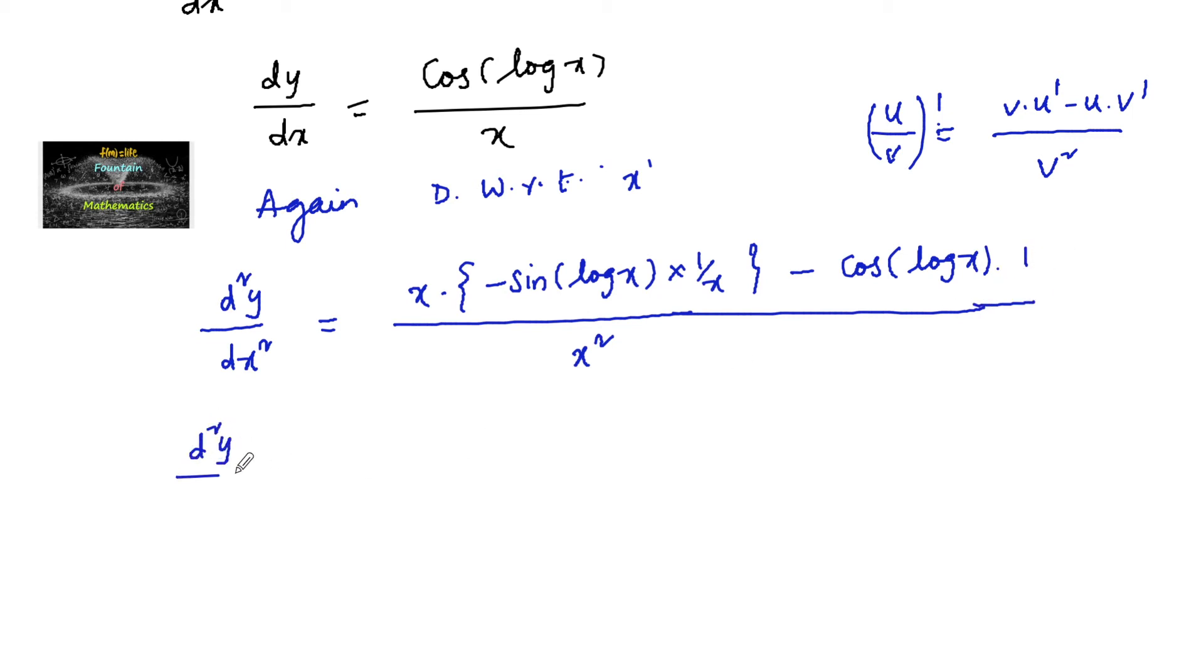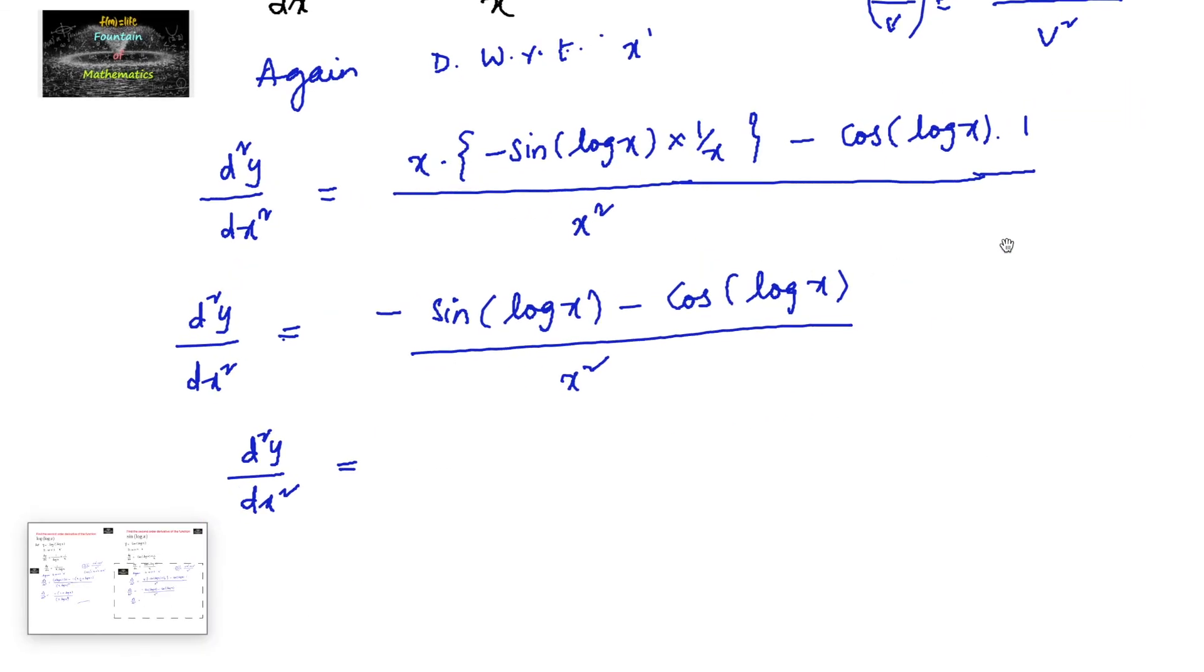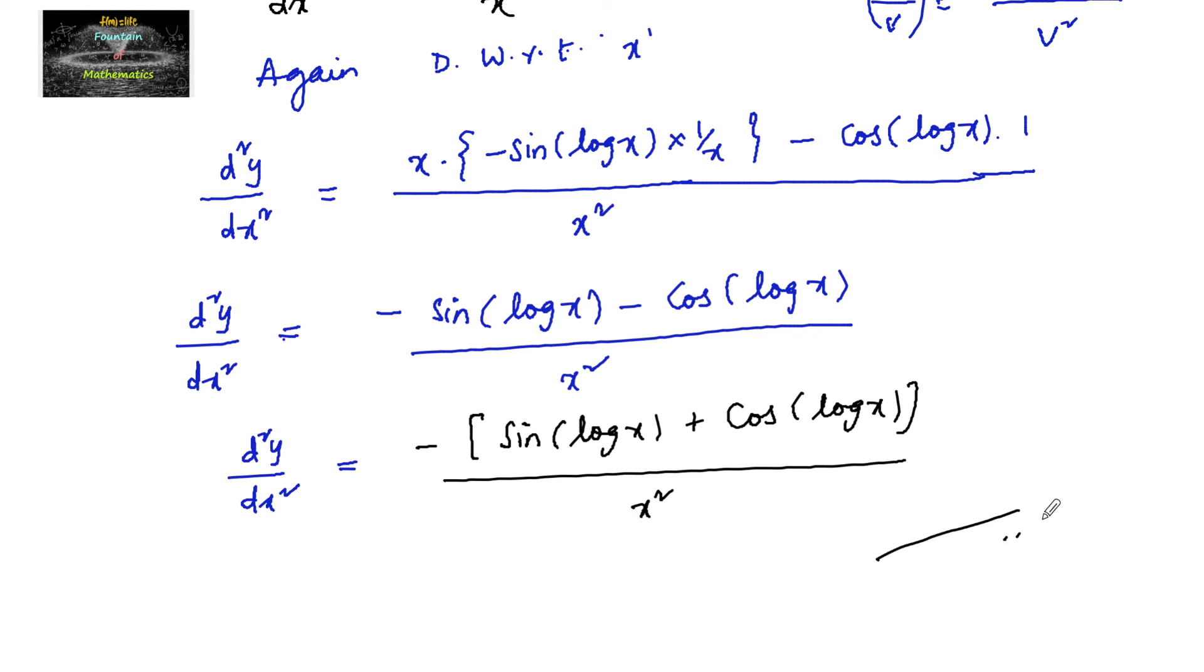So we can write d²y/dx² is equal to... The x and x get cancelled, giving minus sin(log x) minus cos(log x) over x². So this is the answer.